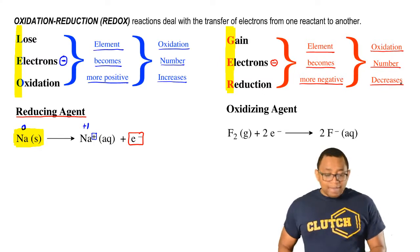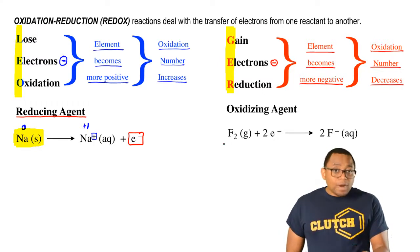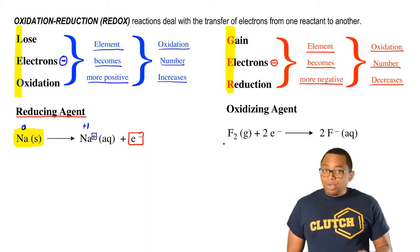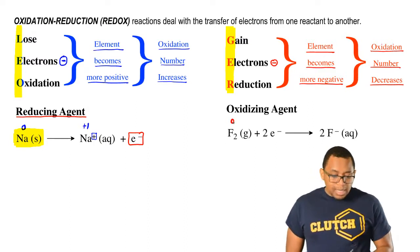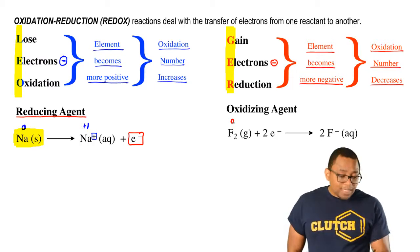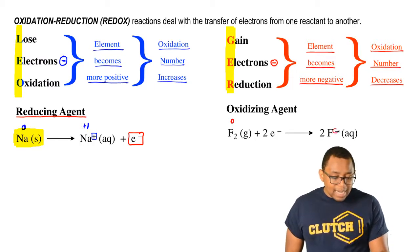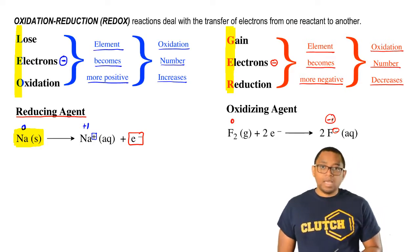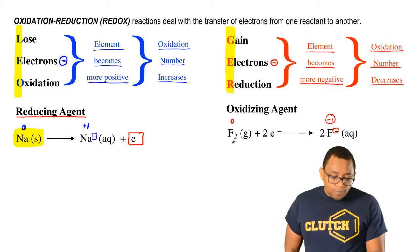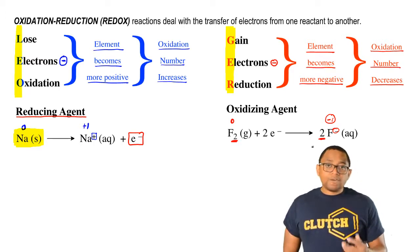If we take a look here, we have fluorine gas in its neutral state with no charge, so its oxidation number is zero. As a product, we see that each fluorine has gained a negative one charge. Each individual fluorine is negative one. We have two fluorines here, so I had to balance out by putting two fluorines here. Each fluorine gained an electron.